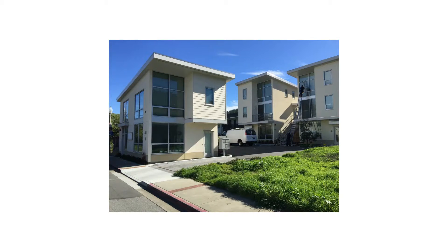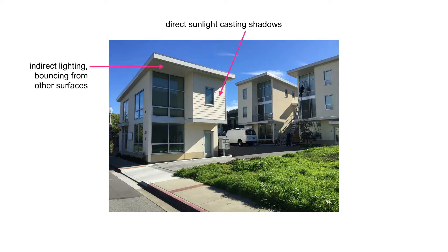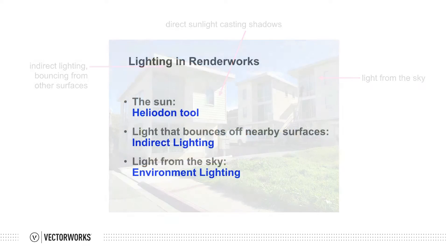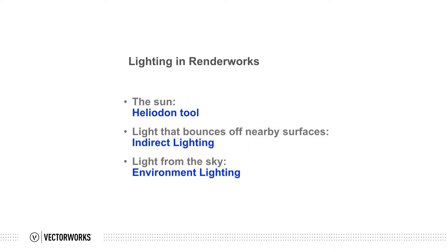If we look outside the window on a sunny day, we can see three types of lighting: the sun, light that bounces off of nearby surfaces, and light that reflects from the sky or the atmosphere. In Renderworks, we can simulate these three types of lighting by using a heliodon for the sun, which we covered in an earlier chapter, and indirect lighting for light that bounces from one surface to the next. The third type, light that reflects from the sky, is called environment lighting in Renderworks.